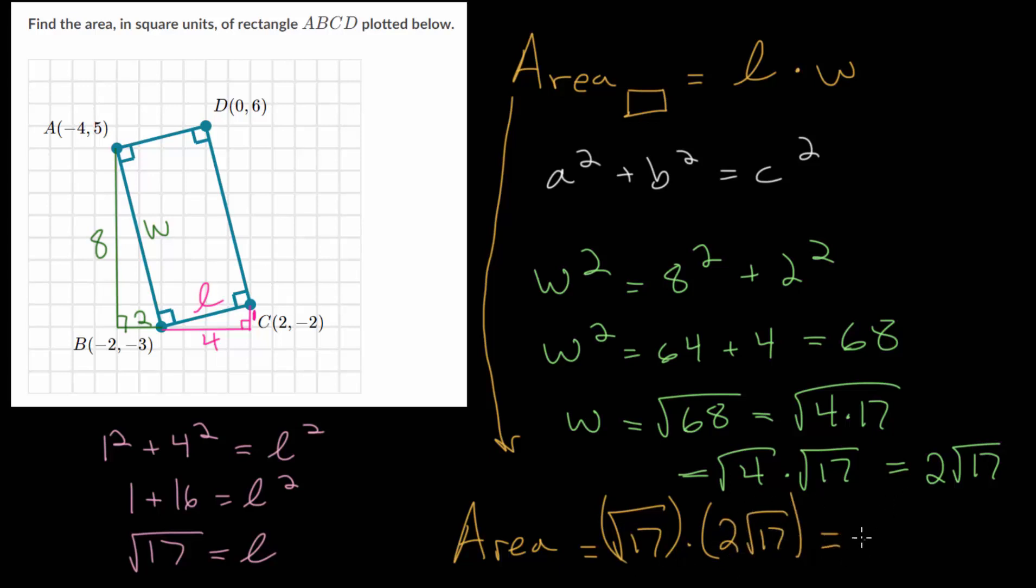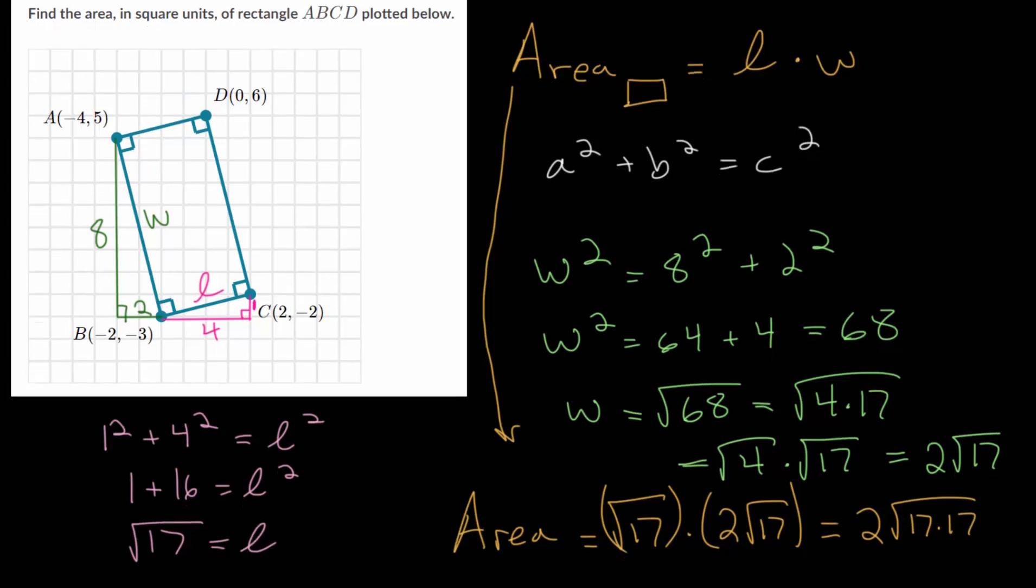And since we have two square roots multiplied together, and I'll just put the two out in front, we can combine them under one square root where we now have a product. And this is 17 squared. And we know that when we take the square root of something squared, they're going to cancel each other out. And so we just get twice 17, which is 34.